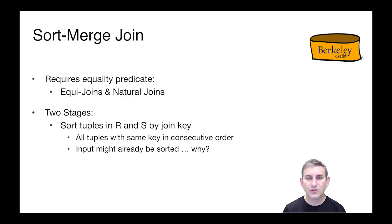There are two stages to the sort merge join. In the first stage, we're going to sort both relations, R and S, by the join key, and this is going to get all the tuples in each relation that have the same key together in consecutive order. Now, in some cases, your input might already be sorted, let's say because the optimizer has placed another sort before the join for some other reason, maybe another sort merge join. And so in the case where the input is sorted, obviously, we don't need to sort it again.